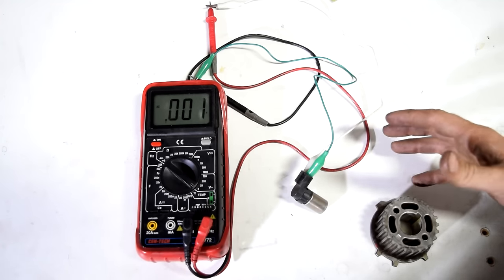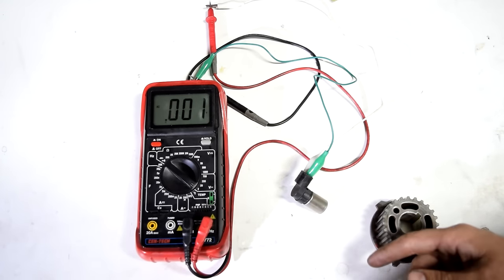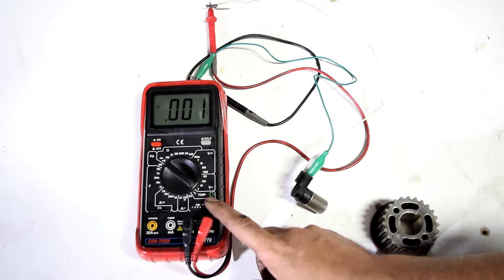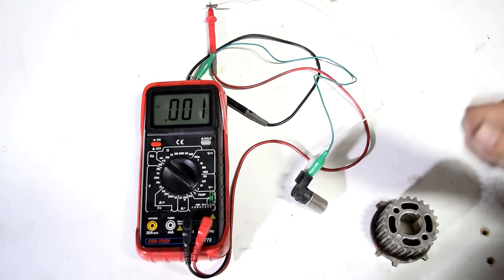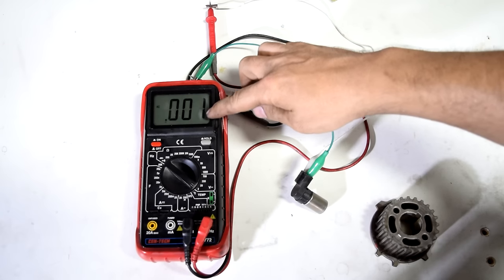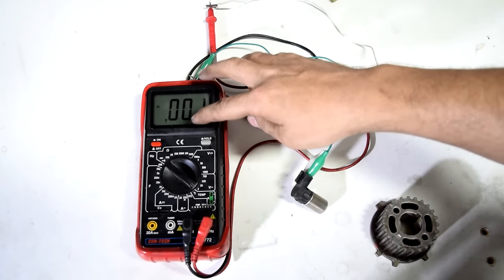Now a scope would be a much better tool to use in order to measure the voltage that's coming out of these sensors but since I'm going to assume most people don't have one of those we're just going to use this multimeter. And if you're going to be doing this on the car as the engine cranks you may not see the voltage go up and down as it's supposed to because your multimeters may not be able to keep up.